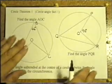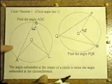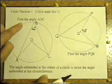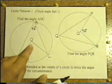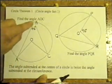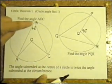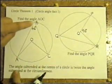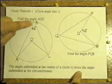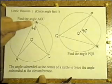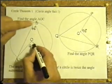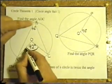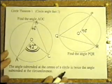Let's look at a couple of questions. Find the angle AOC. The angle AOC is the angle at the centre of the circle, and the angle ABC is the angle at the circumference. The angle subtended at the centre of the circle is twice the angle subtended at the circumference, so that must be two 42s. That angle is 84 degrees. It really is a simple angle fact.